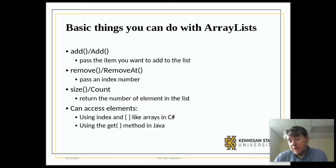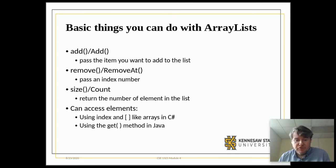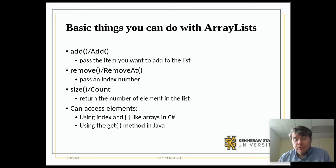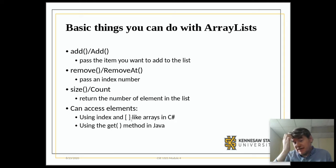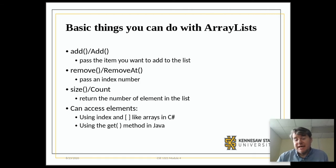Basic things you might want to do with an array list: there's an Add function — capitalization differs between Java and C# — which adds an item into the list. There's Remove, which takes an index if you want to remove a particular item. Size or Count tells you how many things are in there. And you can still access elements — in C# you can access it like an actual array, whereas in Java you have to use the Get method.